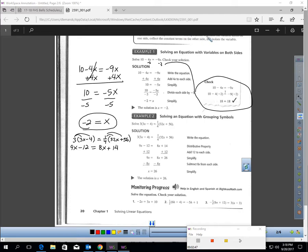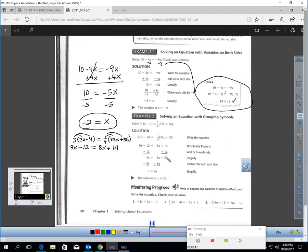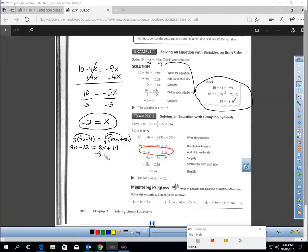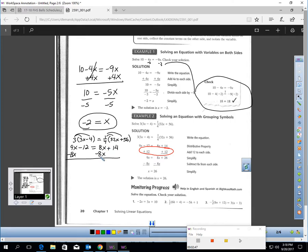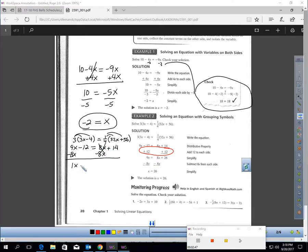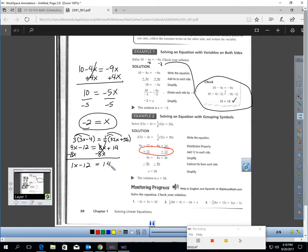The second step, get all the variables on one side. The book didn't even follow their own directions. Let's do it correctly. Let's move all the variables to one side. Let's take away 8x from each side. So the 8x is canceling.